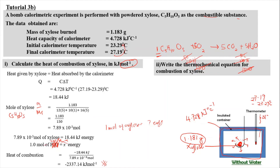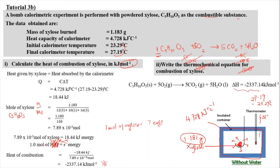For the thermochemical equation, write the balanced equation and include the enthalpy change on the right-hand side: C5H10O5 (s) + 5O2 (g) → 5CO2 (g) + 5H2O (l), ΔH = −2337.14 kJ/mol. Remember to include the phase of every species. For a thermochemical equation you need the balanced equation, phase labels, and the enthalpy of reaction per mole of substance burned.